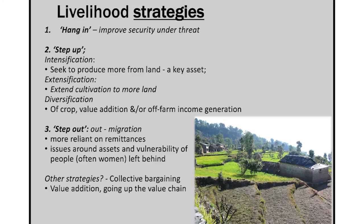Other strategies can also be there. I had mentioned collectives when we were talking about sustainable development — this is an important strategy for facing some of the challenges we face, like the Amul cooperatives, where people were organized into groups to confront the power of big corporate enterprises. It can also include possibilities for value addition and going up the value chain. The government in India is currently supporting farmer producer organizations — it wants them to collectivize and add value to their produce in order to get a better price for their commodities.